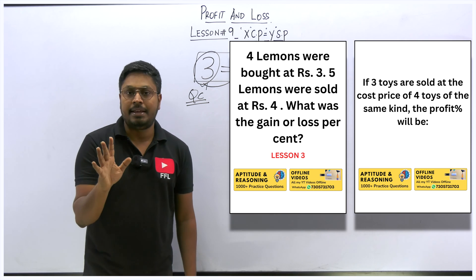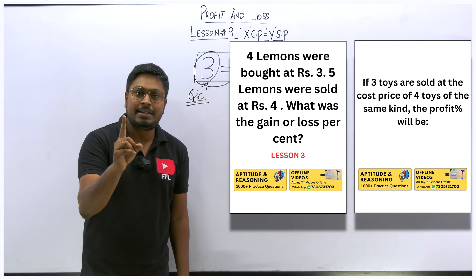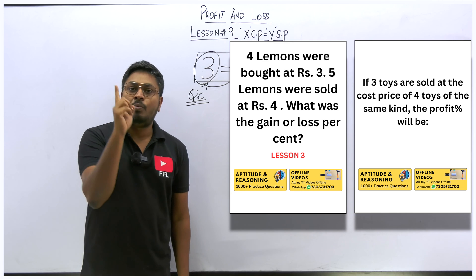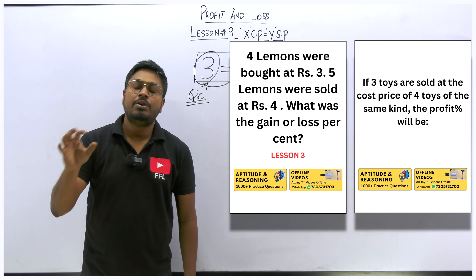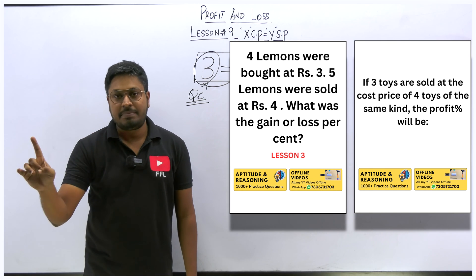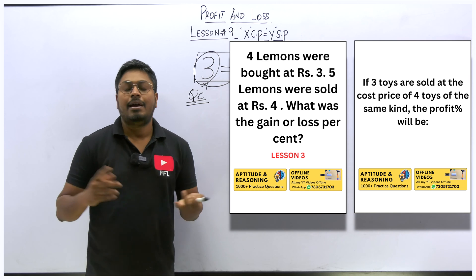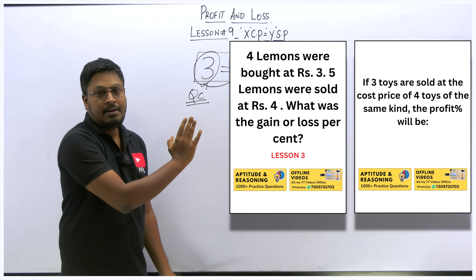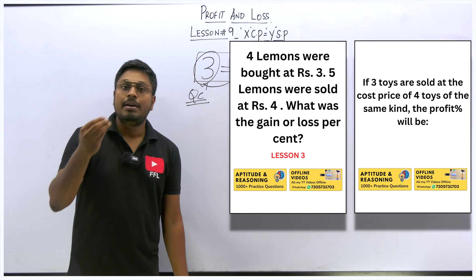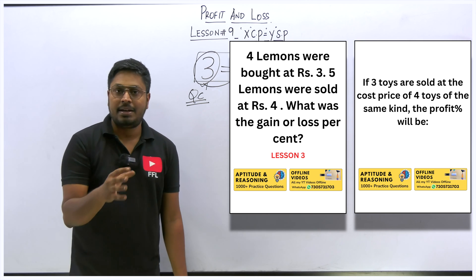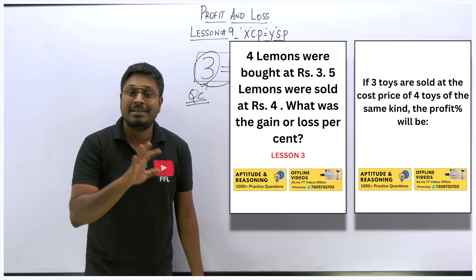The solving method is the same. In lesson number three, whenever a question is based on quantity — ten books are sold, twenty toys are sold, whatever — your first step is: find one quantity cost price and find one quantity selling price. If you find one CP and one SP, then finding profit percentage or loss percentage is easy. We will do the same thing here. Also, while watching all my videos, take a separate note for quantitative aptitude — profit and loss — capturing the important points from each video.